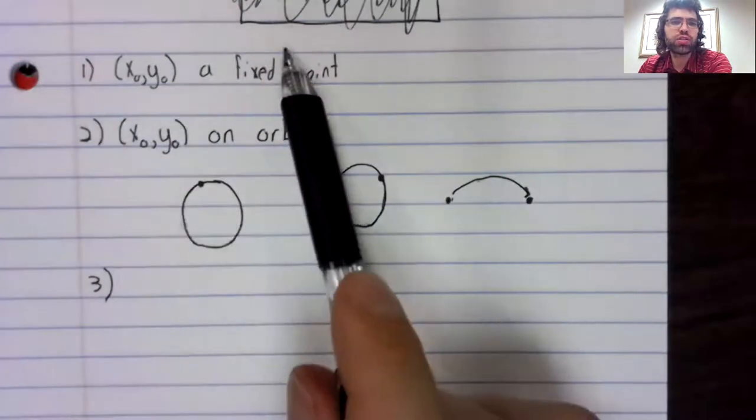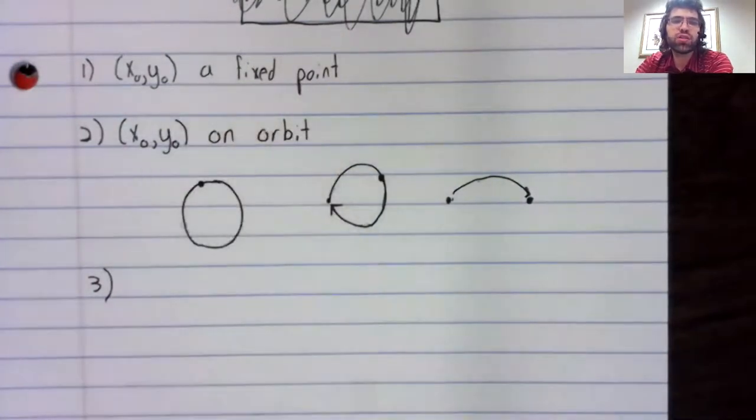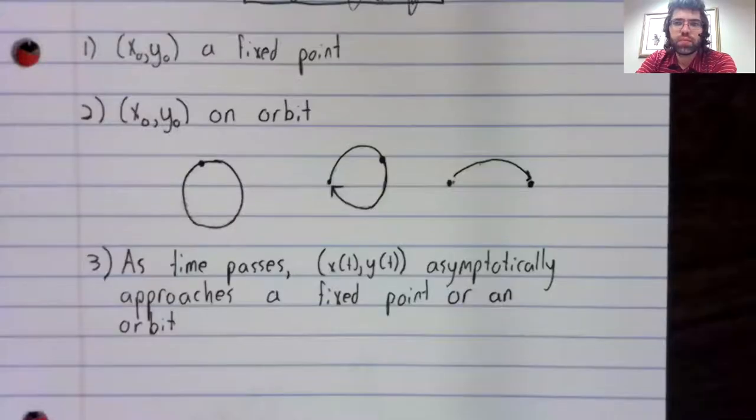What if we are not starting at a fixed point? What if we are not starting on an orbit? If we do not start on a fixed point or an orbit, then as time passes, we asymptotically approach a fixed point or an orbit.